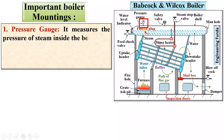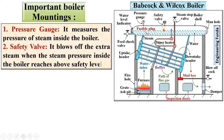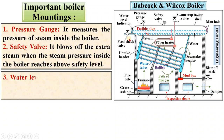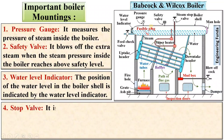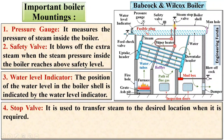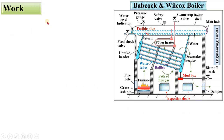Now let us see the important boiler mountings. The pressure gauge measures the pressure of the steam inside the boiler. The safety valve blows off extra steam when the pressure inside the boiler rises above the safety level. The water level indicator shows the position of the water level in the boiler shell. The stop valve is used to transfer the steam to the desired location when required. The blowoff cock is used to blow out settled impurities, mud, and sediment present in the boiler water — you can discharge these impurities and sediments with the help of the blowoff cock.